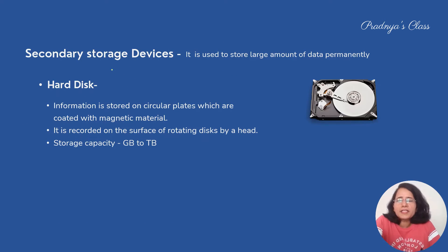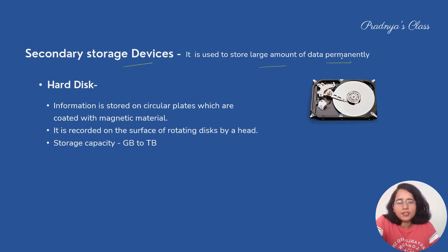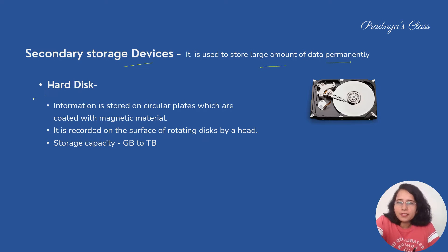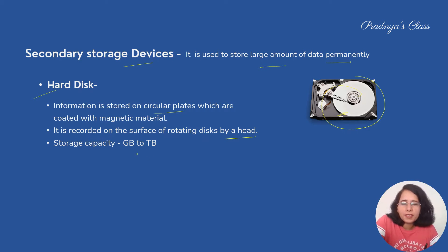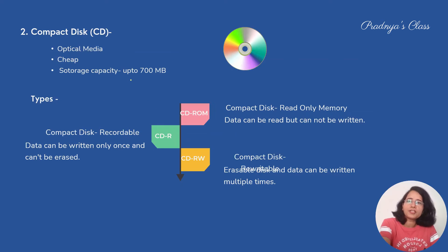Now let's discuss some secondary storage devices. Secondary storage is used to store large amounts of data permanently, as main memory stores data temporarily. The first secondary device is the hard disk. Hard disk consists of circular plates coated with magnetic material, and data is recorded by the read/write head. The storage capacity can range from GB to TB, making it the most widely used secondary storage device.